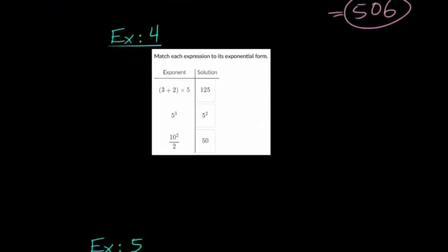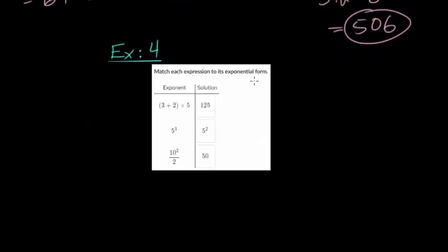Now this one, we need to match each expression to its exponential form. So again, we're going to simplify everything and then see what the solution should be. So we're going to do parentheses first. So we get 5 when we do 3 plus 2 because we can simplify that set of parentheses. And then multiplied by 5 gives us 25.